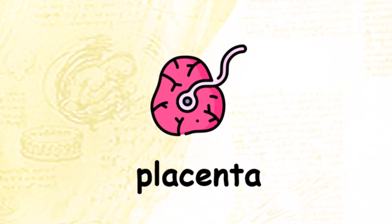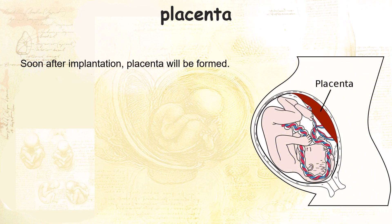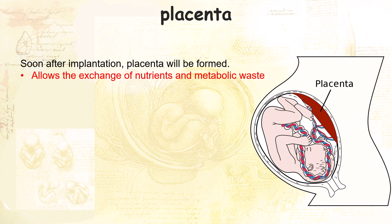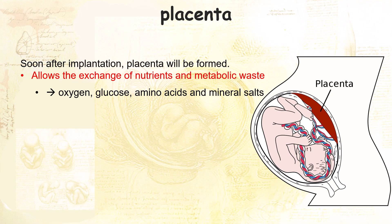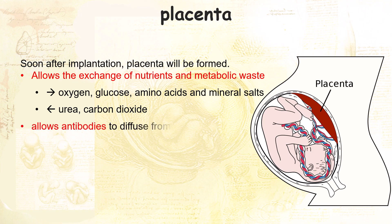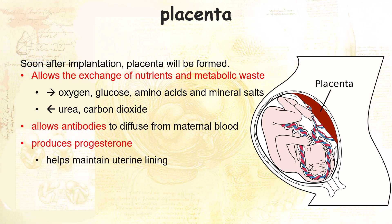The placenta will soon form after implantation. It is like a bloody pillow, and its function is to allow the exchange of nutrients and metabolic waste. Oxygen, glucose, amino acids, and mineral salts will diffuse into the fetal blood capillaries, while wastes such as urea and carbon dioxide will diffuse into the mother's tissues. The placenta also allows antibodies from the mother to diffuse into the fetal blood, which protects the fetus against certain diseases. It is also responsible for producing progesterone, which helps to maintain the uterine lining.